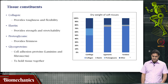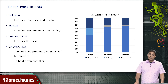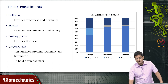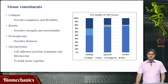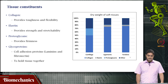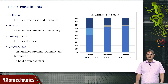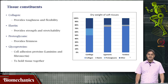What are soft tissues? Different soft tissues exist — ligaments, tendons, cartilage — and all of these are composed of collagen, elastin, proteoglycans, and other glycoproteins, and they have different functions. The important function of collagen is to provide strength, toughness, and flexibility. Elastin provides strength and stretchability. Proteoglycans provide firmness, and glycoproteins like laminins and fibronectin hold tissue together — they are also called cell adhesion proteins.